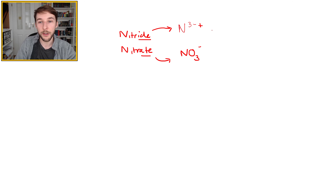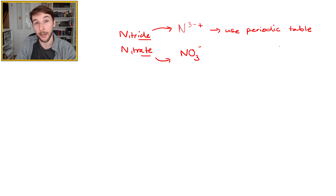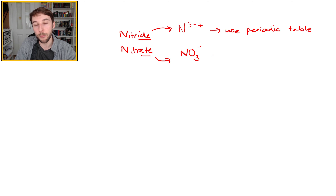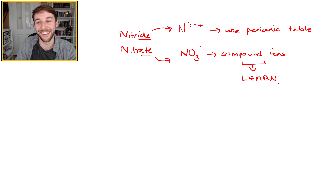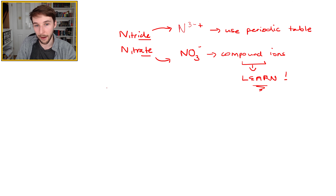For -ide endings, you can use the periodic table to work out the charge. But for -ate endings, you need to remember them — these are compound ions, sometimes called molecular ions. You must learn your compound ions for A-level chemistry.